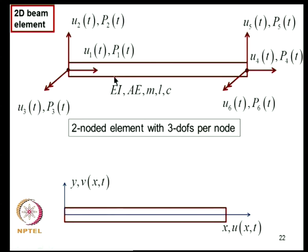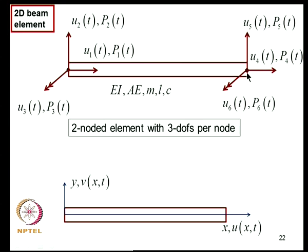The parameters of the 2D beam element model are: flexural rigidity EI, axial rigidity AE, mass per unit length m, length L, and damping parameter C. Flexure follows Euler-Bernoulli beam theory. The field variables are U (axial deformation) and V (transverse displacement). The nodal values U1 and U4 are the values of U at X=0 and X=L respectively; U2, U3, U5, U6 are nodal values associated with V and dV/dX at X=0 and X=L.